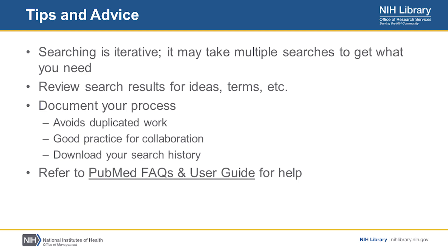Some tips and advice about PubMed: searching is iterative, and it could take multiple searches to get what you need. The advanced search page with search history will be an invaluable way to go back and forth between iterative searches and keep track of what you're doing. You can also review your search results for additional terms and ideas, and use the advanced search page to help document your process. There's an option on the search history to download your search history into an Excel spreadsheet. There's also the PubMed FAQs and User Guide with a lot more details on how to search fields and advanced features to be effective in your searching.